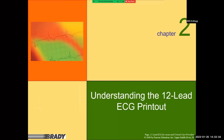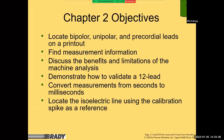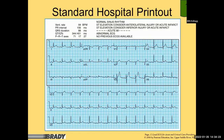Now let's talk about the printout — laying a foundation. Chapter two objectives include: locating unipolar, bipolar, and precordial leads on a printout; finding measurement information such as J points and numerical values; understanding the benefits and limitations of machine analysis (a binary system, so not very accurate); converting seconds to milliseconds, since the printout is always in milliseconds; and locating the isoelectric line for calibration as a reference.